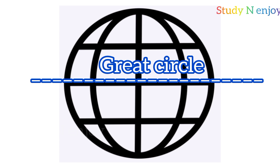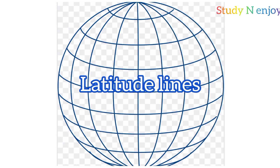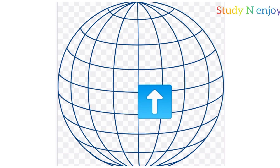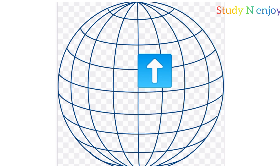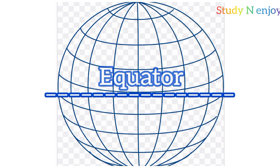The equator is known as the great circle. We can draw parallel equidistant lines at a distance of 1 degree towards the north and south from the equator. These lines are called the lines of latitude. As they move towards the poles, they keep getting shorter and shorter. There would be 90 lines to the north of the equator and 90 lines to the south of the equator, giving us 181 lines of latitude in total.